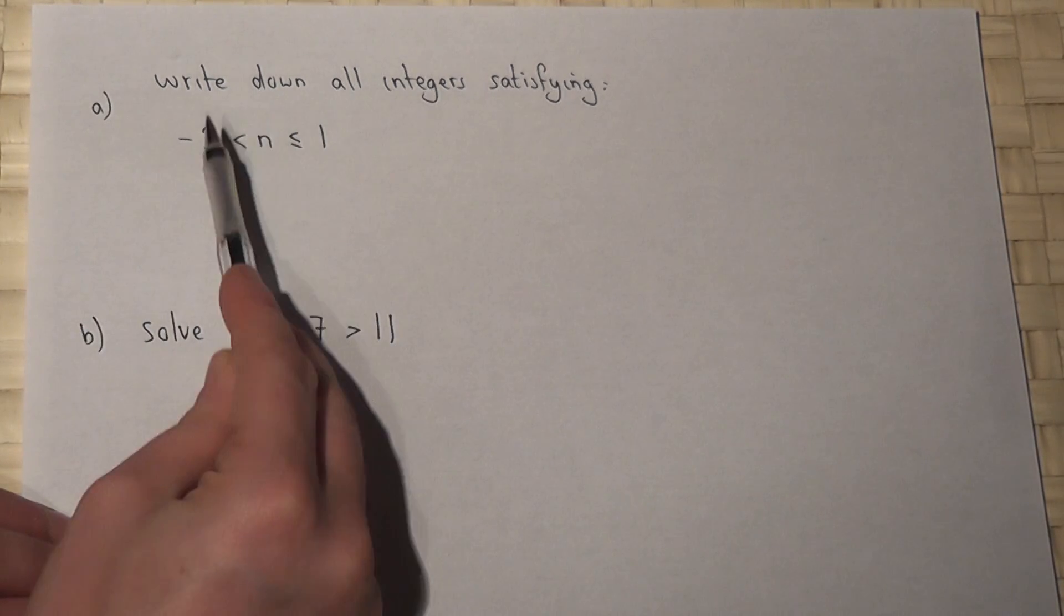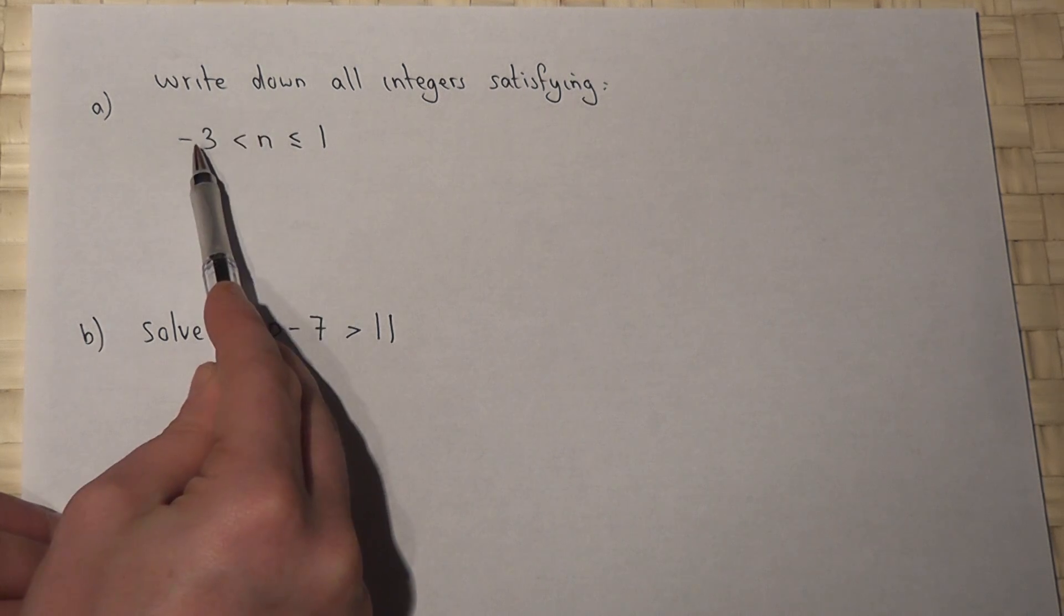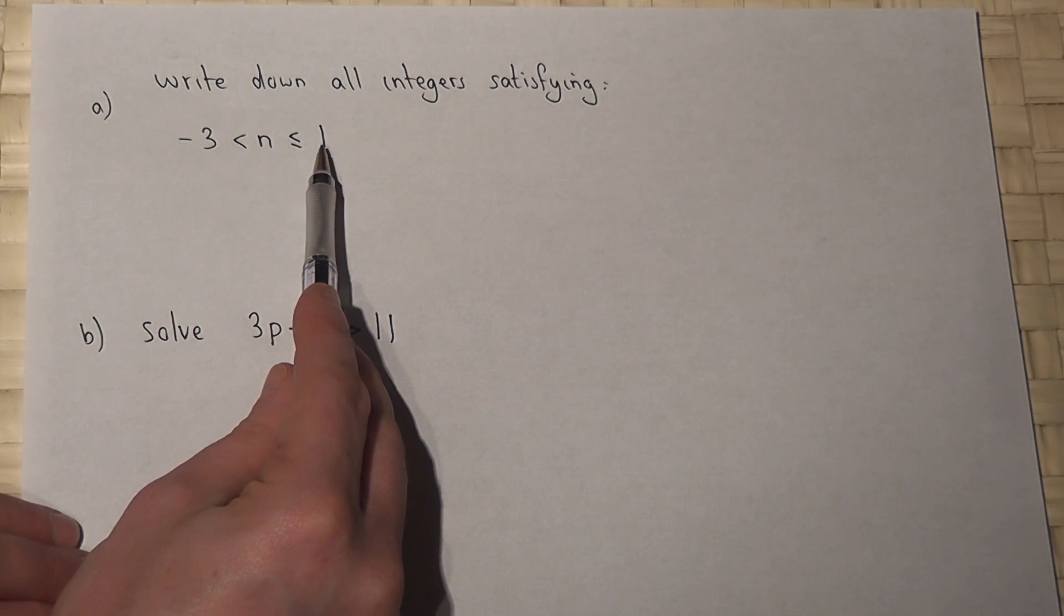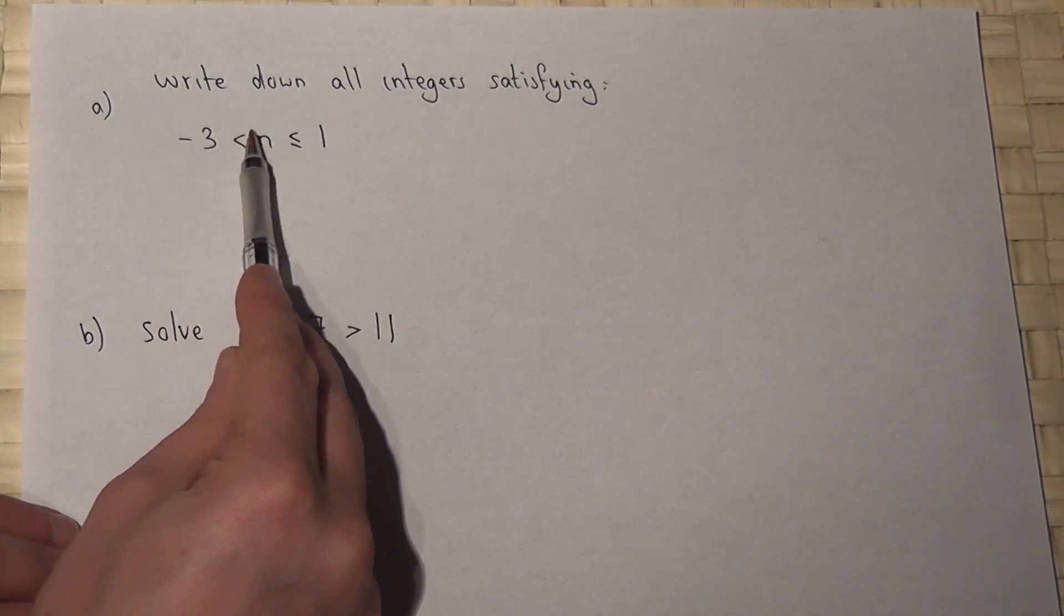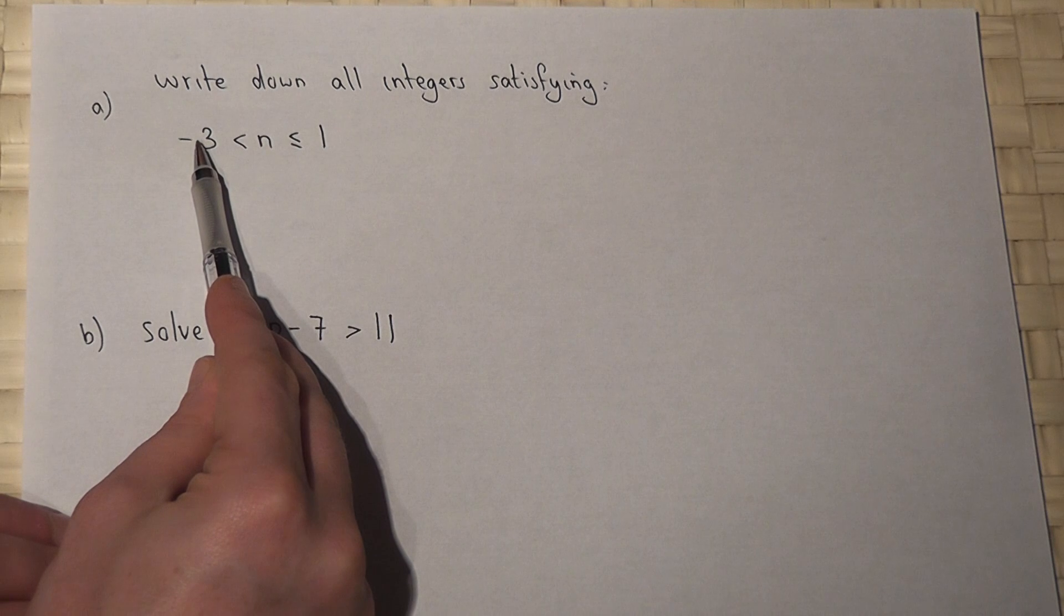This statement reads that our value of n, our integer, is between minus 3 and 1. However, this is a strict inequality, so our value must be bigger than but not including minus 3.